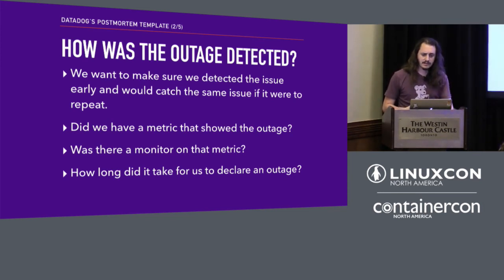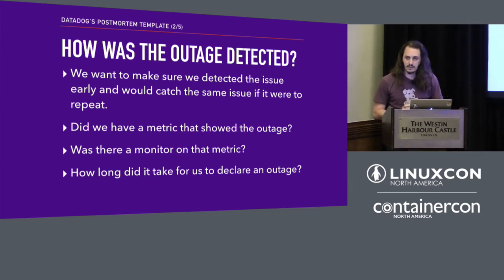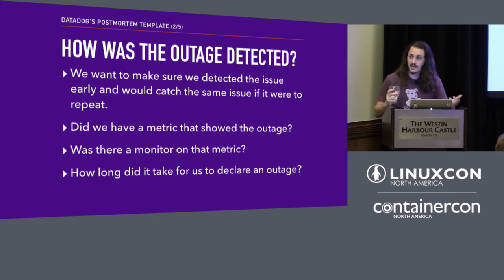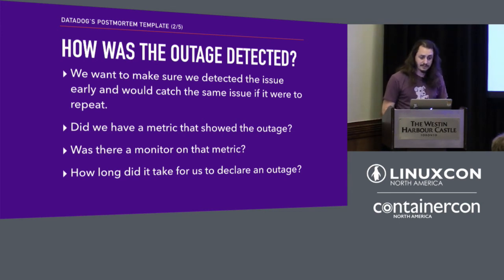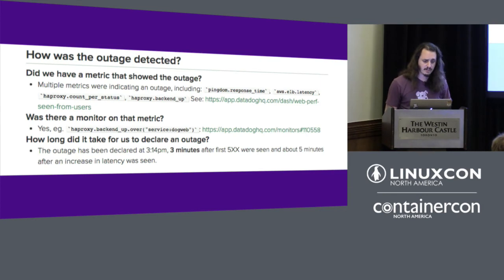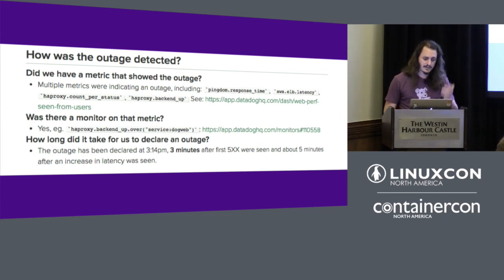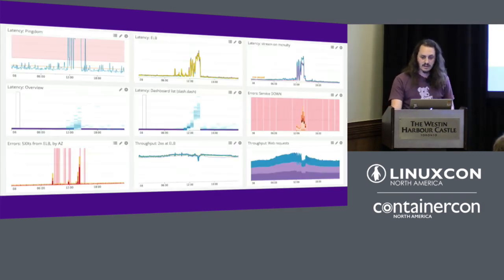The next question you want to ask is how was this detected — did you have all the tools in place to catch it next time? Metrics and monitors are how we improve our response time. We focus on mean time to resolution, not necessarily mean time between failures. This section helps you understand where you can improve. Did you have the right monitors? Was there a metric that showed the outage? In our case, we had multiple metrics that caught it, we were alerted almost immediately, and it took us less than three minutes from start to sending out the notification and updating our status pages.